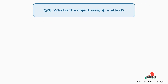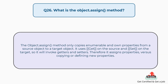Question number twenty-six: what is the Object.assign method? The Object.assign method only copies enumerable and own properties from a source object to a target object. It uses 'get' on the source and 'set' on the target, so it will invoke getters and setters. Therefore it assigns properties versus copying or defining new properties.